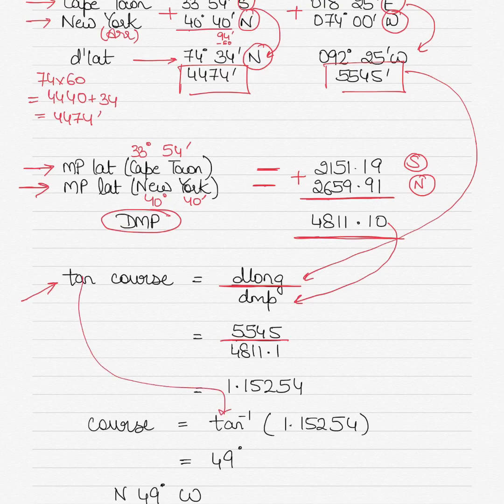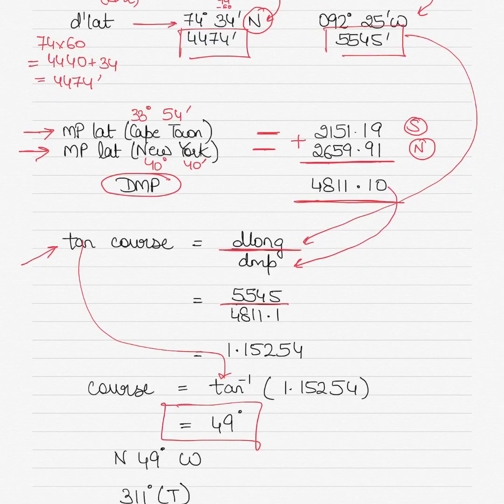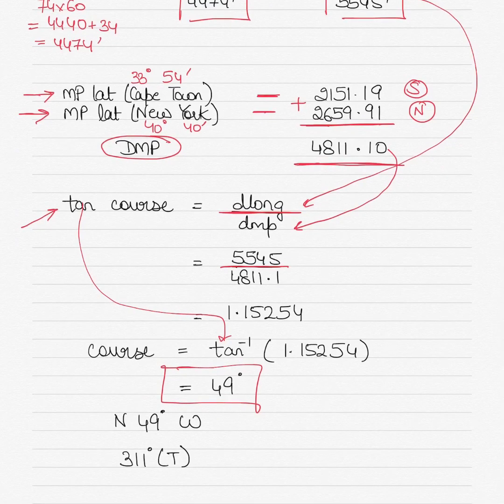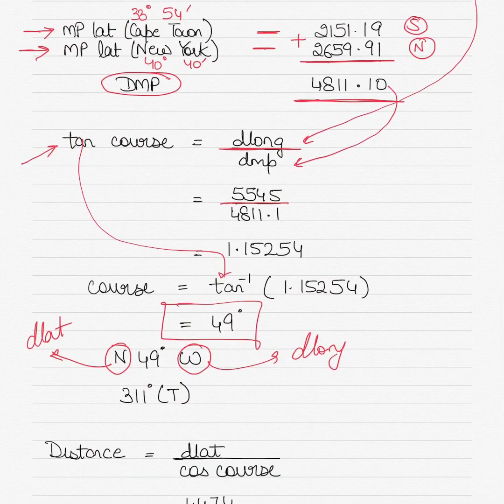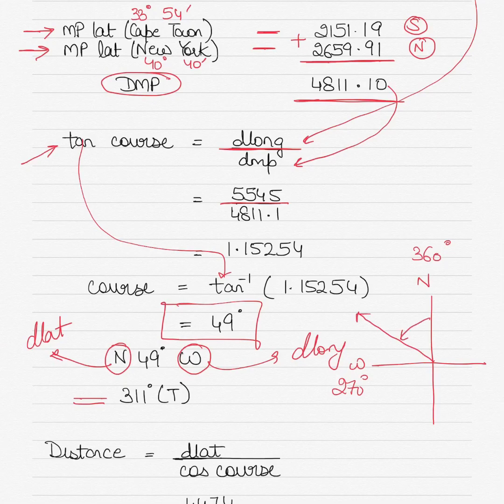Take tan to the other side—it becomes tan inverse. What you get is 49 degrees. But this is not the course—you have to name the course. We name it north 49 degrees west. Why? Because D'lat is north and the D'long was west. So north 49 degrees west becomes equal to 311 degrees true. How? Because if this is north at 360 degrees and west is 270 degrees, 360 minus 49 equals 311 degrees.